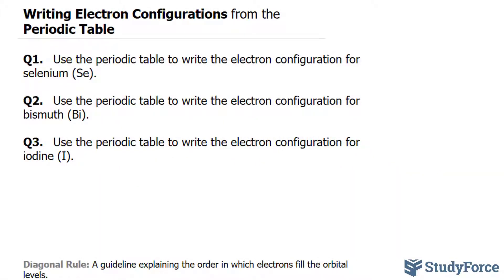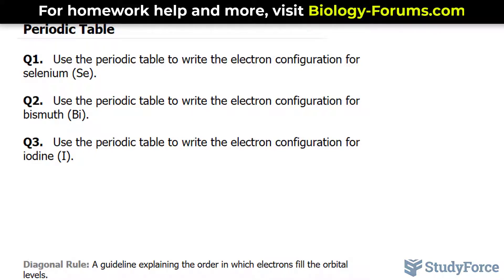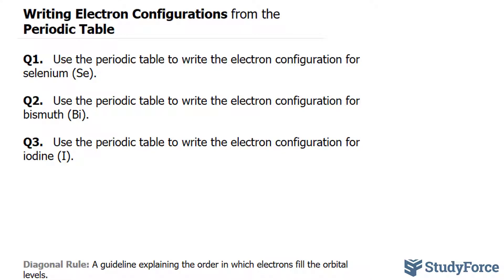In this lesson, I'll show you three examples on how to write the electron configuration from the periodic table. The technique I show you here is an extension of what you've seen earlier, where we learned how to write the electron configuration from scratch, but this time we'll use properties of the periodic table to help us do it quickly.